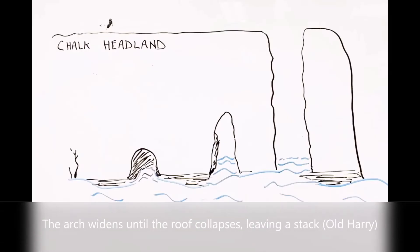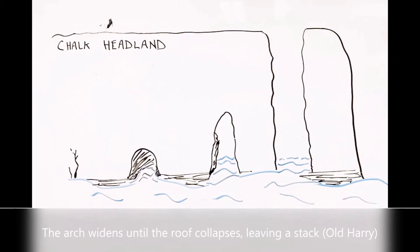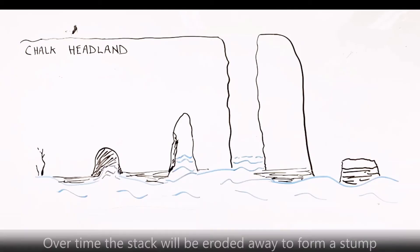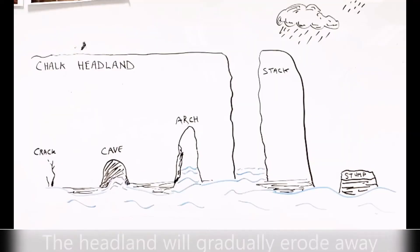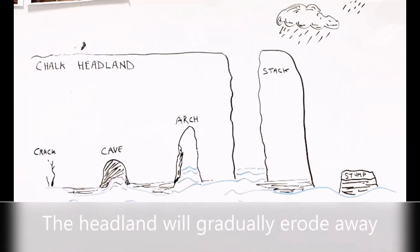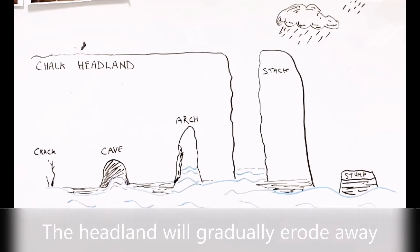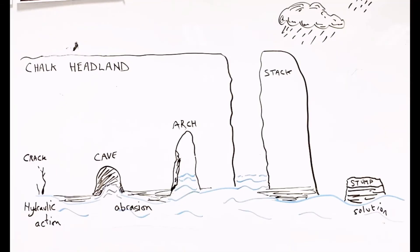The arch over time widens until the roof eventually collapses, leaving a stack such as Old Harry. Over time this stack will be eroded away to leave a stump at the base. Mechanical weathering from the sky and chemical weathering from the sea will gradually make the stump disappear, but new features will start to form once again in the headland.